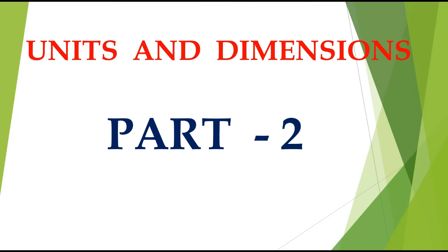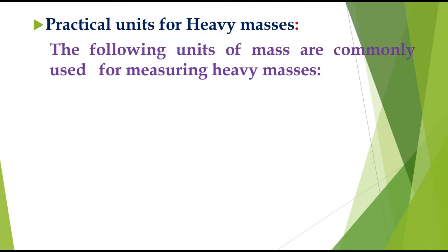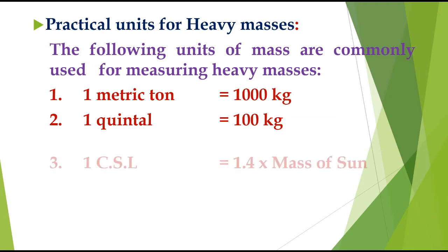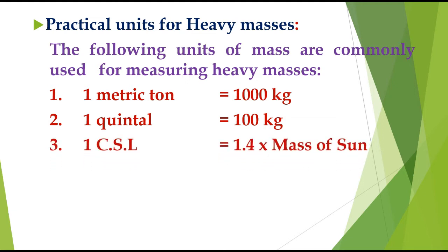In this video we are discussing practical units for heavy masses. The following units of mass are commonly used for measuring heavy masses. For example, one metric ton — also called simply 'ton' — is equal to one thousand kilograms.